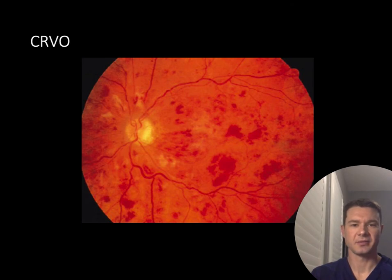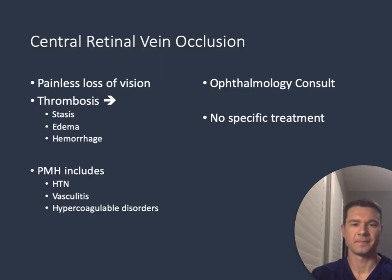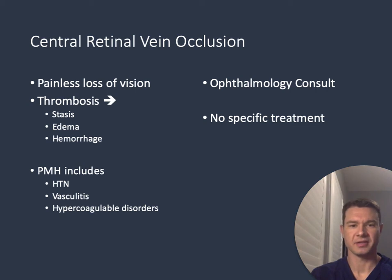In this image, we see the fundoscopic exam of a central retinal vein occlusion. You can see what is referred to as the blood and thunder appearance. Patients with CRVO typically present with painless vision loss, usually caused by thrombosis leading to ischemia. Patients frequently have a history of hypertension, vasculitis, or hypercoagulable disorders. This diagnosis requires emergent ophthalmology consultation, but unfortunately there are no specific ED treatments for these patients.